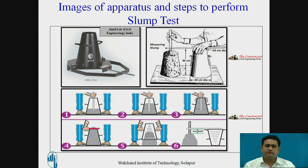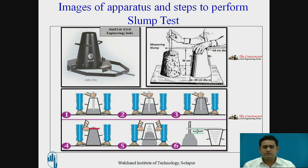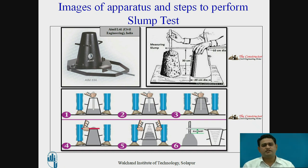This is the image of the apparatus and the steps to be performed for the slump test. The apparatus includes a base plate, a cone, and a tamping rod. The cone dimensions are: height 30 cm, bottom diameter 20 cm, and top diameter 10 cm. The tamping rod is 16 mm in diameter and 60 cm in length.